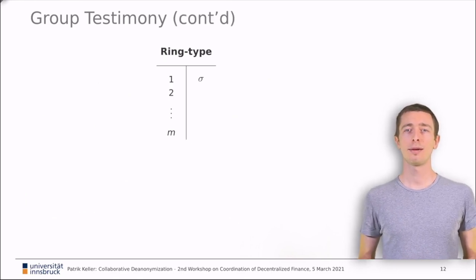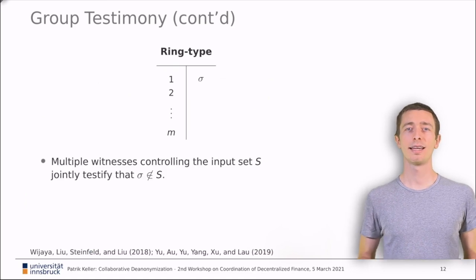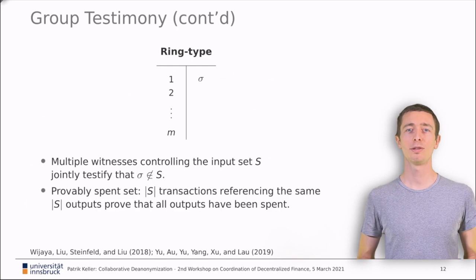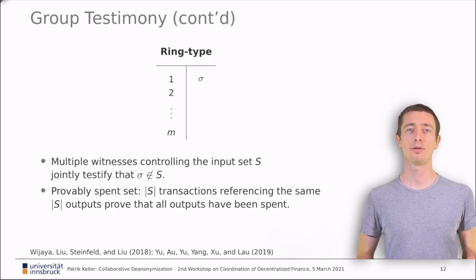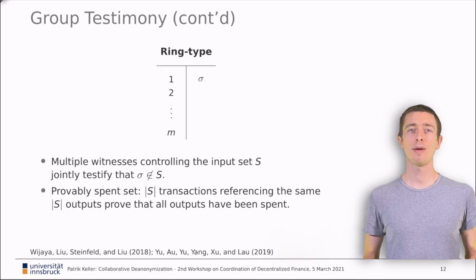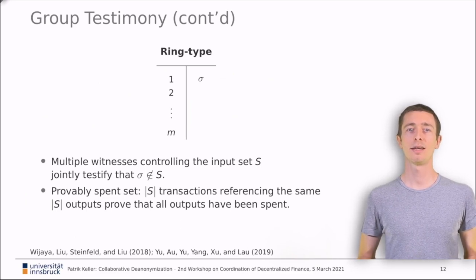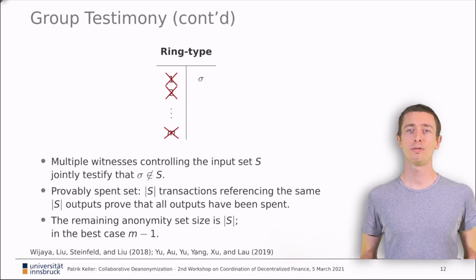Group testimonies for ring type transactions are a bit more involved. They are based on prior work on so-called provably spent sets. The idea is as follows. Consider you have a set of m-1 ring type transactions and all inputs belong to a set of at most m-1 distinct previous outputs. Additionally, none of the m-1 transactions is a double spend. Then, all of the m-1 inputs must have been spent in exactly these m-1 transactions. Remember that an individual ring type testimony proves that one input was spent elsewhere. With provably spent sets, a group of witnesses can testify that all their inputs have been spent elsewhere. Again, the police learns one link, but the anonymity within the group of witnesses is preserved.